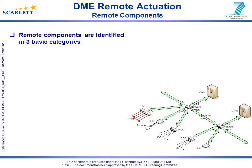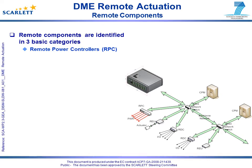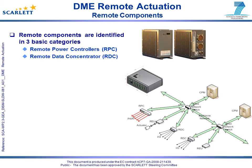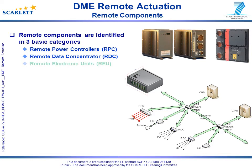The remote components of a DME architecture may be placed into three categories: remote power controller, remote electronic unit, and remote data concentrator. The remote power controller is used to switch local electrical loads and provide advanced load protection. The remote data concentrator provides a hub for local I/O collection, processing, and interfacing to a backbone network.